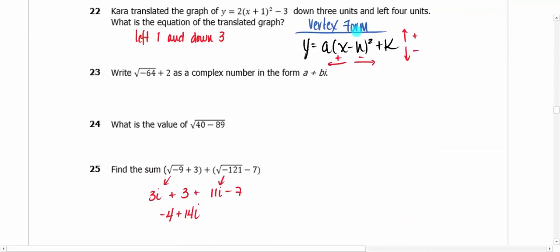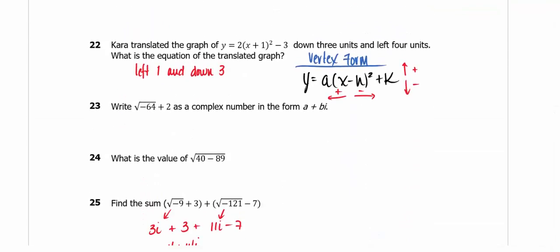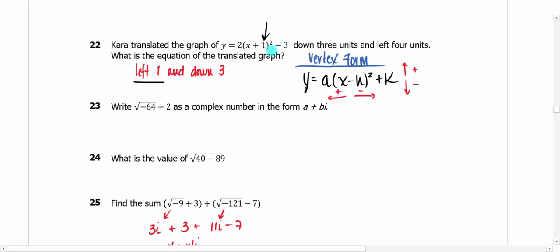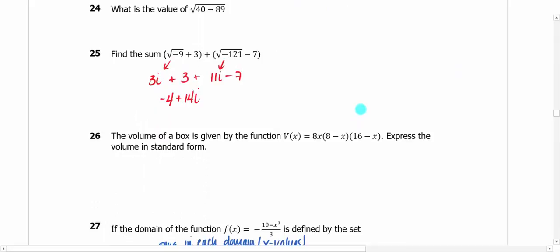This question about Kara's graph is really asking: do you know how the vertex form moves? Inside the parentheses, the H value is the horizontal shift — but because there's a negative there, a positive value inside means we moved left and a negative means right. K works as expected: positive goes up, negative goes down. So positive 1 means left 1, and negative 3 means down 3.